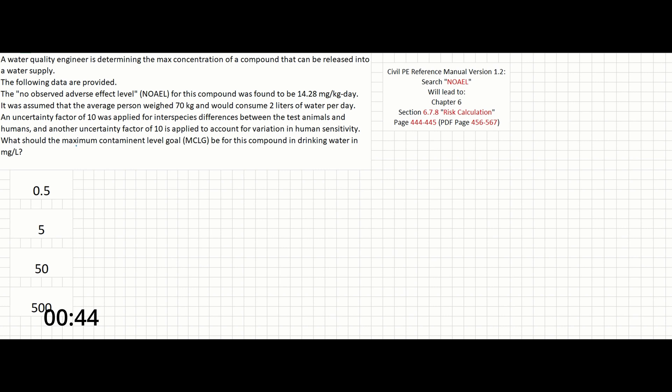What should the maximum contaminant level goal, or MCLG, be for this compound in drinking water in mg per liter?